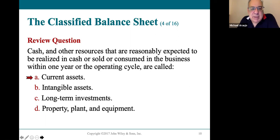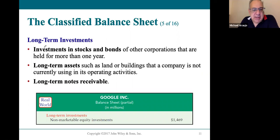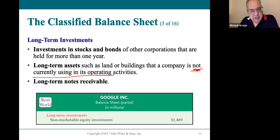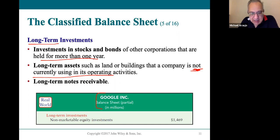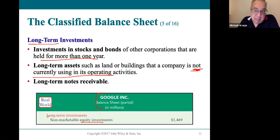Cash and other resources reasonably expected to be realized in cash or sold or used within a year are called current assets. Long-term investments are owned by the company but not currently used in its operating activities — not used in selling goods or services to customers. They're assumed to be held for longer than a year. Here's a clip from Google's balance sheet — they have equity investments. Google doesn't make a living buying and selling stocks; that's why these are long-term investments.